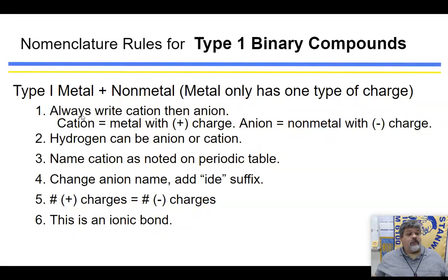And so this is what we do. We always write the cation, then the anion. Now the cation is the metal, and it has a positive charge. The anion will be the non-metal, and it will always have a negative charge.